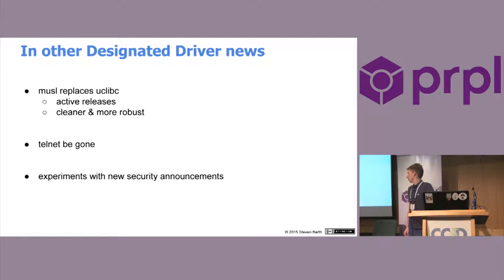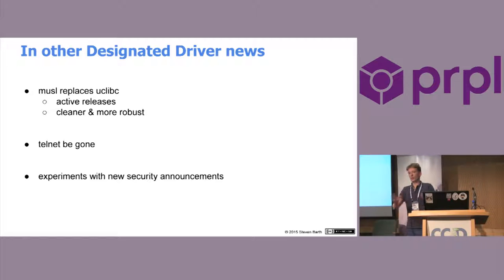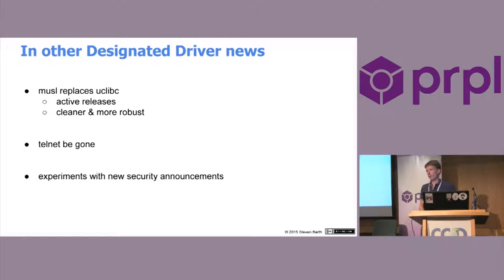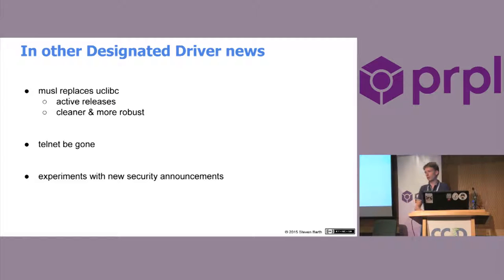Telnet be gone. If you flash a default OpenWRT build or do a factory reset, there used to be a Telnet interface accessible until you set a password, and it was automatically disabled. We got rid of that now. You can use SSH from the start in trunk. We don't use a default password, but you can still utilize SSH without a password until you actually set one for the root account.